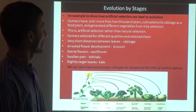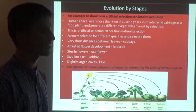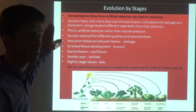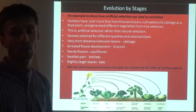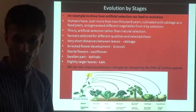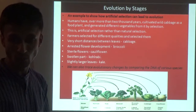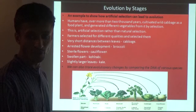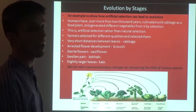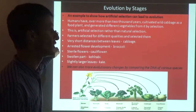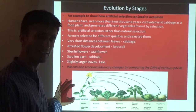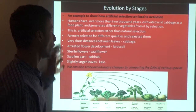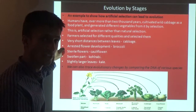Evolution by stages: an example to show how artificial selection can lead to evolution. This is an important exam question - write an example to show how artificial selection can lead to evolution. Humans have, for more than 200 years, cultivated wild cabbage as a food plant and generated different vegetables from it by selection. This is artificial selection rather than natural selection - we are growing wild cabbage and now we have other forms available.